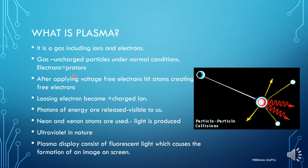Gas is initially uncharged particles in normal conditions, like electrons are equal to protons. But as we have some voltage applied, after applying voltage, free electrons hit atoms creating free electrons.